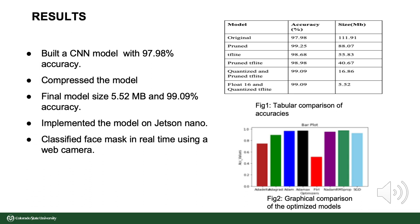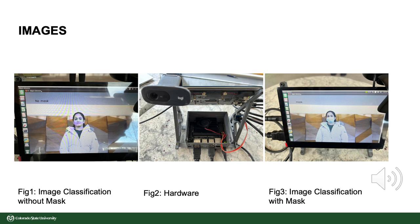The model obtained after software implementation is also deployed onto the Raspberry Pi to compare accuracies and test for an increase in inference speed. The NVIDIA Jetson Nano Developer Kit proves to be superior in terms of both characteristics. The output images obtained show image classification without a mask displaying a warning message, along with the hardware setup image, and image classification with a mask correctly identified.